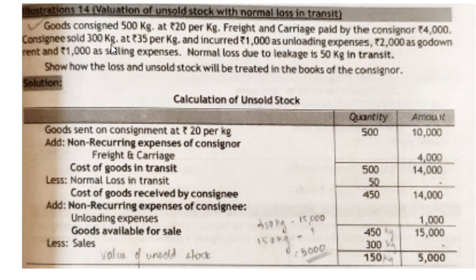The consignee sold 300 kg at rupees 35 per kg and incurred 1,000 as unloading expenses. You should know what are the non-recurring expenses of the consignee. Unloading expense is non-recurring — it appears only when the consigner sends goods to the consignee; workers unload the truck and keep goods in the warehouse. This is before it reaches the premises, so it is non-recurring and will be added. Godown rent and selling expenses are recurring in nature, so we will not consider them. Normal loss due to leakage is 50 kg in transit.